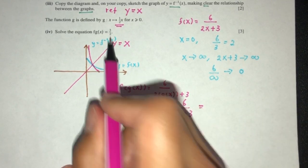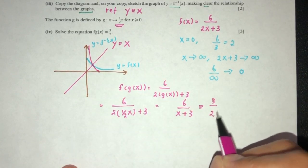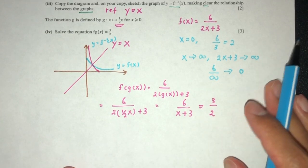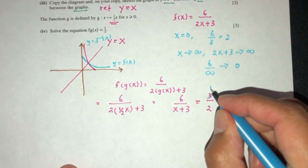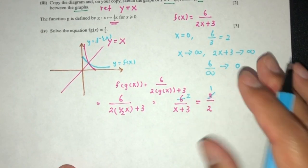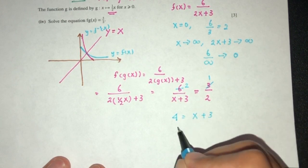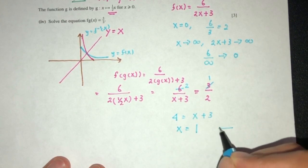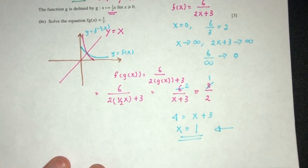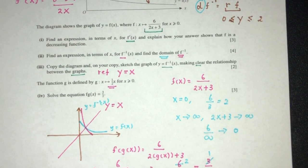Now this equals 3/2. First divide by 3: that will be 2 over (x plus 3) equals 1/2. Then cross multiply: you will have 4 equals x plus 3, so x equals 1. That is your answer for the last question.